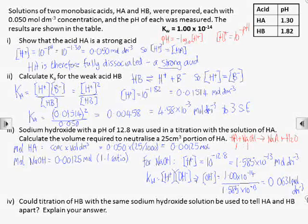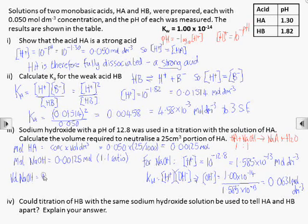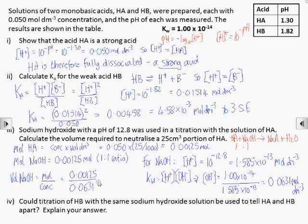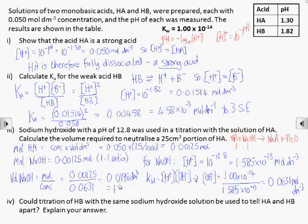Now we have moles of hydroxide ions and concentration of hydroxide ions, we can work out the volume in dm³ and for convenience convert that to cm³ by multiplying by 1000.